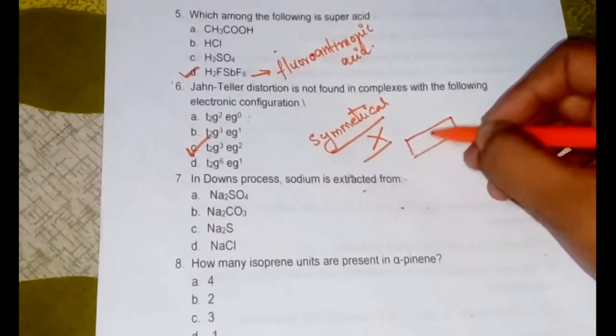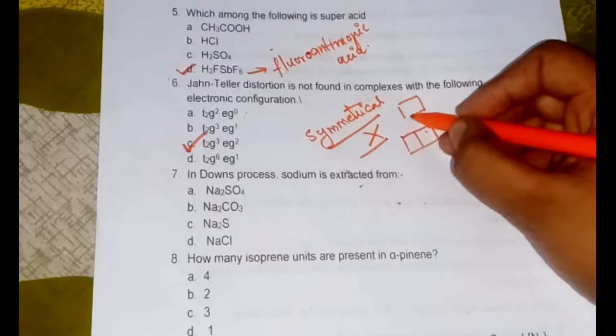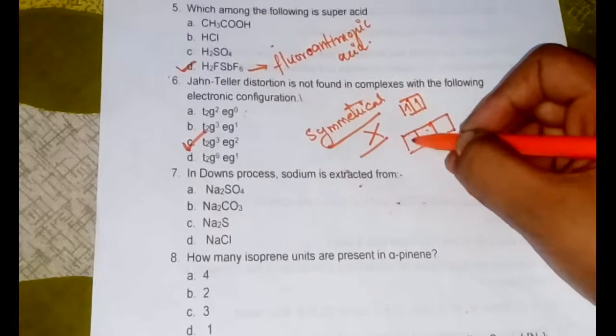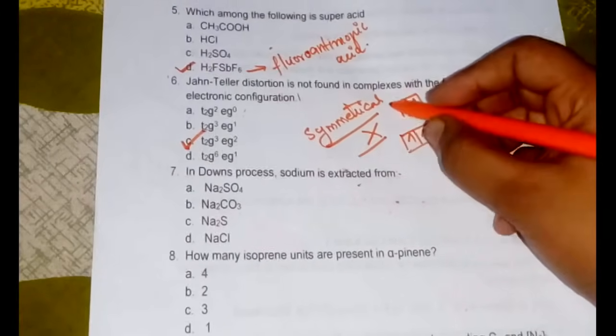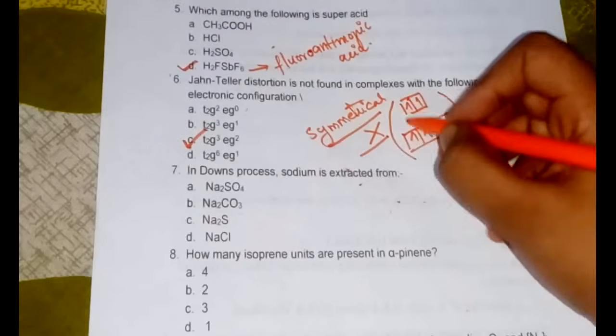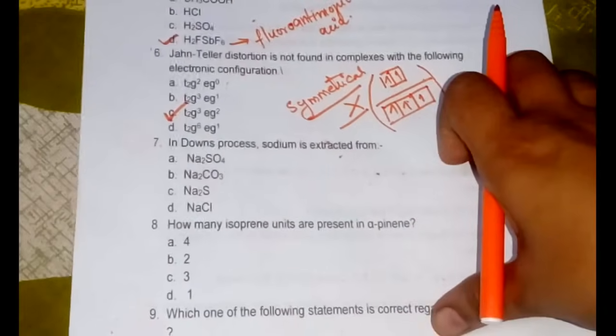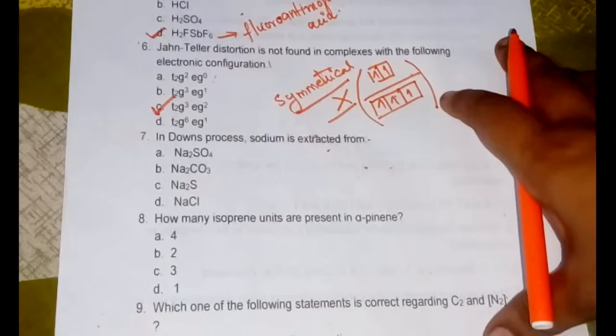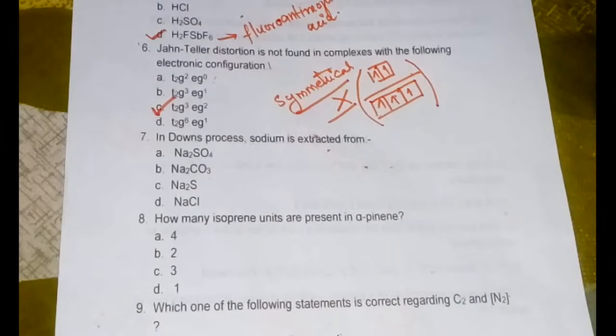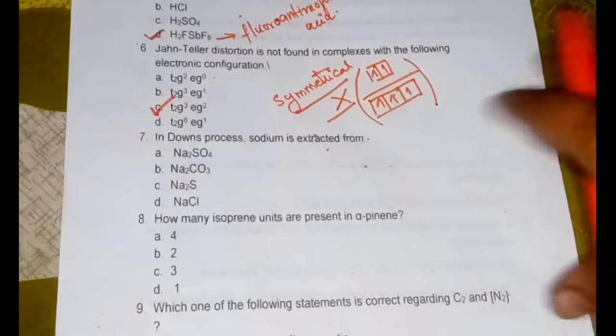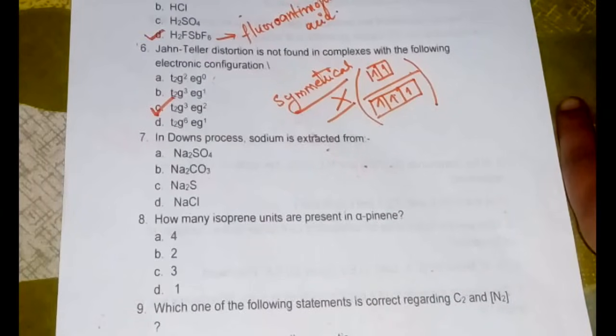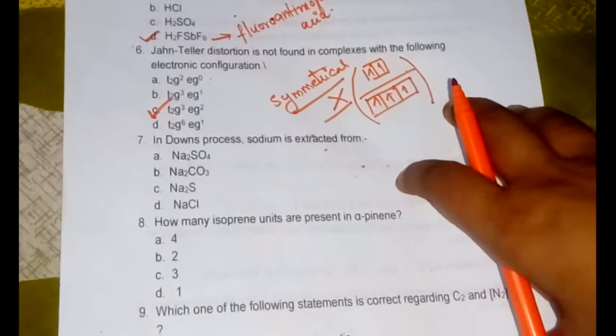Let's see: t2g6 eg0 not a symmetrical configuration, t2g3 eg1 is not a symmetrical configuration, but t2g3 eg2 is definitely a symmetrical configuration. So that one will not be showing the Jahn-Teller distortion especially since this is a high spin complex. We can see both the t2g level and the eg level both are half filled so this is a highly symmetrical system and therefore this will not undergo Jahn-Teller distortion. In the coming videos I will be taking classes to understand which all configurations will undergo Jahn-Teller distortion.